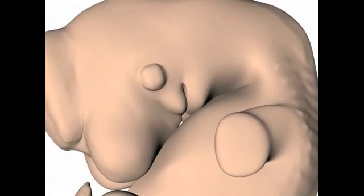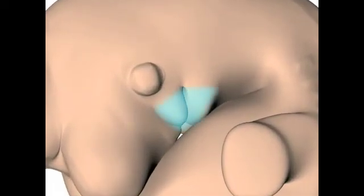Within the developing jaws of the embryo, epithelial and ectomesenchymal cells will interact with each other to produce teeth.